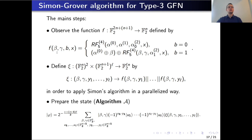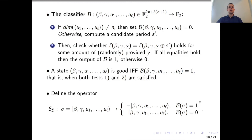We provide more details regarding the Simon-Grover combination, which is essentially the same algorithm used by Leander and May, adapted to our scenario. A precise definition of function f in terms of all variables beta, gamma, b, and x is given. We also use a function xi that implements the function f multiple times. For the Simon's part, we use algorithm A, which starts with a zero quantum state and produces quantum state phi.